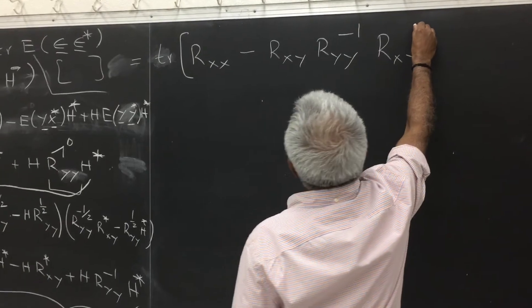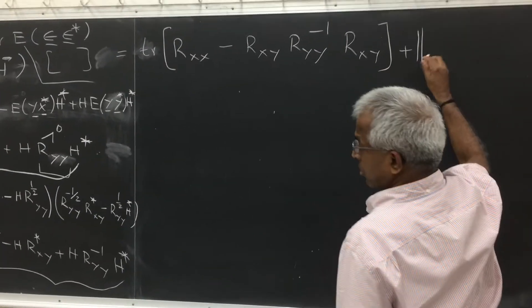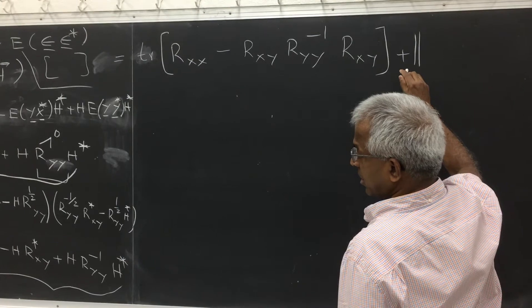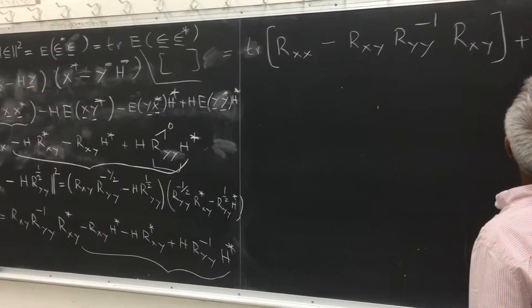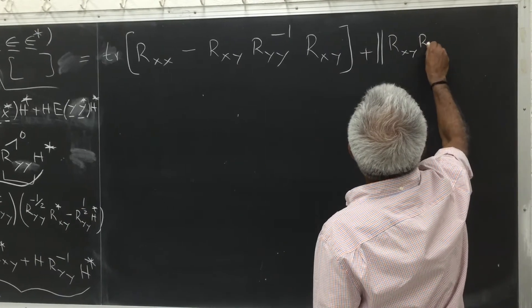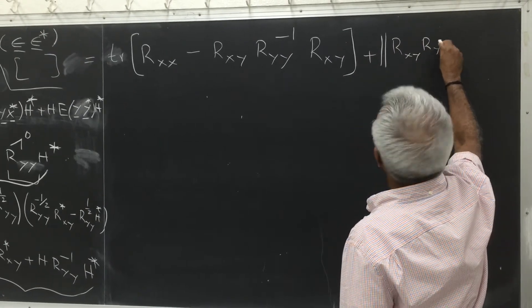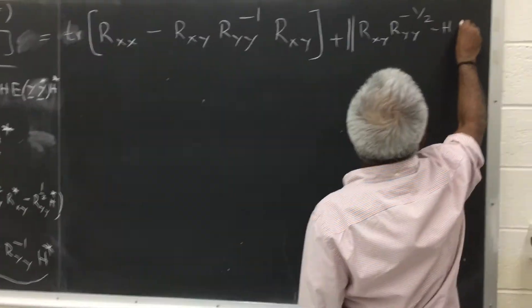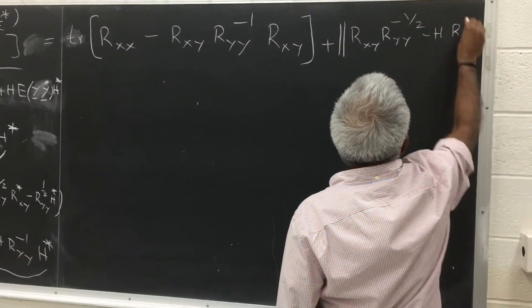Plus the second quantity involving h, which would be Rxy, Ryy inverse, minus h, Ryy.